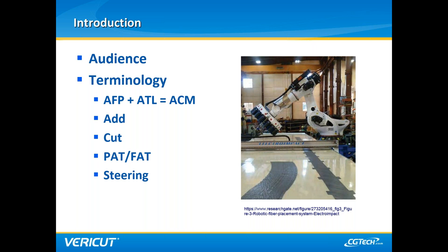Fiber winding processes are specifically excluded from this discussion due to their comparatively more direct and straightforward process. The main difference between AFP and ATL is the width of material being placed. AFP material is more narrow, typically ranging from an eighth of an inch to a half of an inch, while ATL can be as wide as 12 inches. There are some inherent challenges specific to more narrow or wider materials.